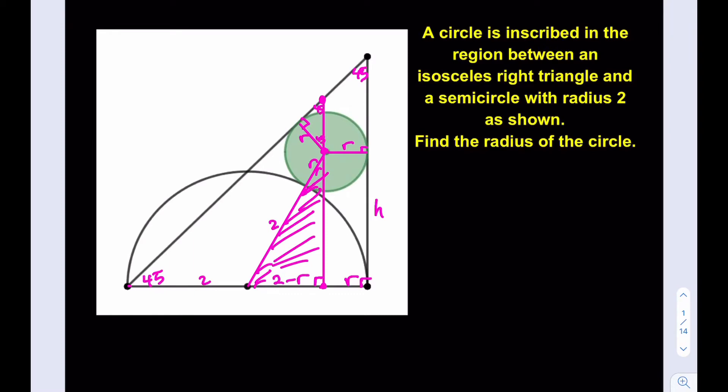So this is also going to be isosceles. It's going to be r, r, and r√2. So, now, this is 4 minus r. This is also going to be 4 minus r. If I subtract the r√2 from that, I'm going to find h. So h is equal to 4 minus r minus r√2. We got that part.